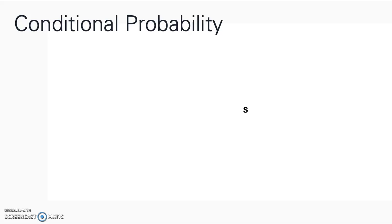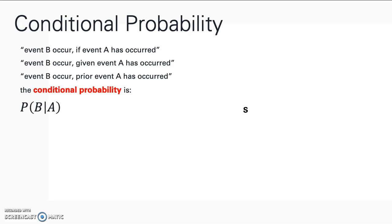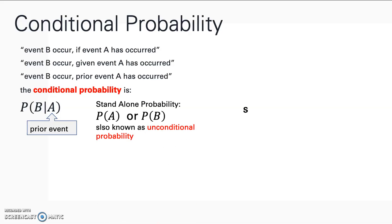A conditional probability is when two events A and B happen, and the conditional event is expressed as: event B occurs given that event A has already occurred. Here we use A as the prior event, and event B only happens after event A has occurred. Compare this with a standalone probability, where the event does not need any prior event to happen — this is known as an unconditional event with an unconditional probability.